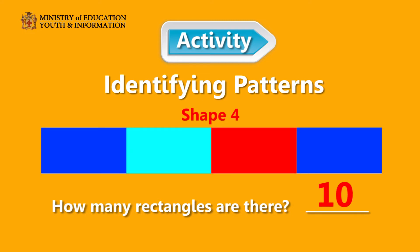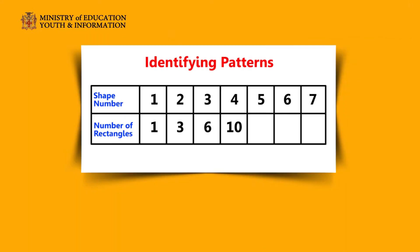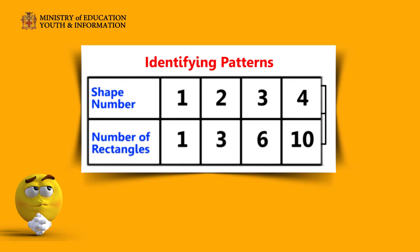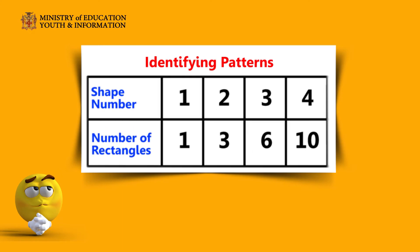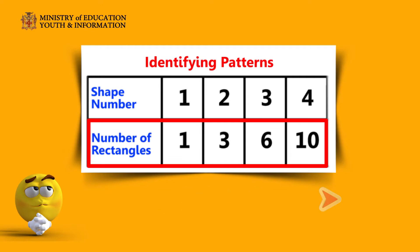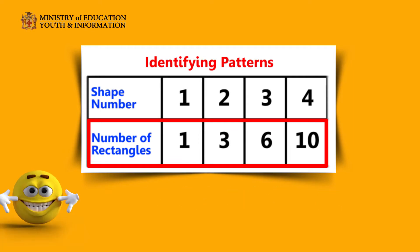You have done well. Here is a table that shows the shapes we have completed so far. Do you see the pattern? No miss, I do not see the pattern. Me neither. Alright, let us take a closer look at the number of rectangles from shapes 1 to 4. Are the number of rectangles increasing or decreasing? Increasing. Very good.